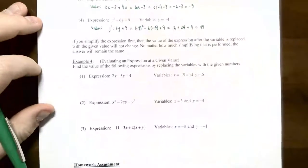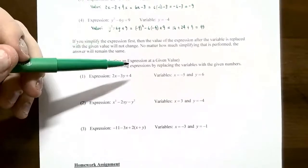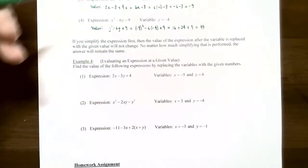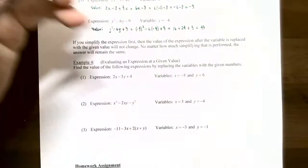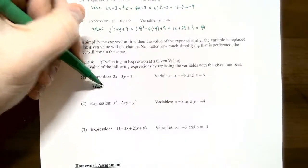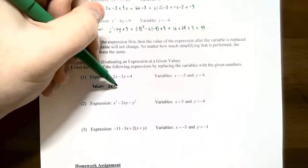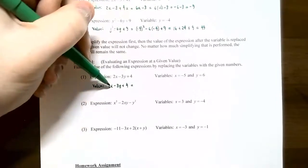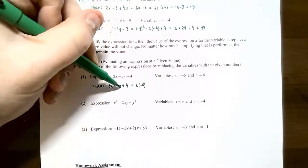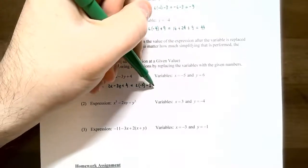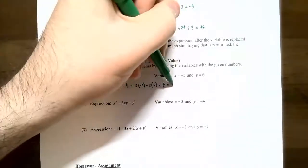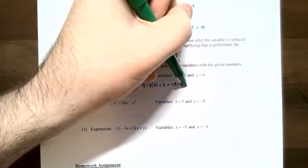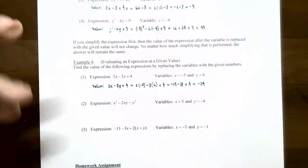Example 4: finding the value of expressions with multiple variables. Number one: 2x minus 3y plus 4, with x equals negative 5 and y equals 6. Replace x with (negative 5) and y with (6): 2 times (negative 5) minus 3 times (6) plus 4. That gives negative 10 minus 18 plus 4, which simplifies to negative 24.